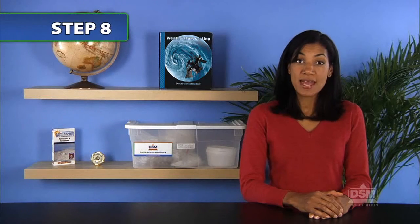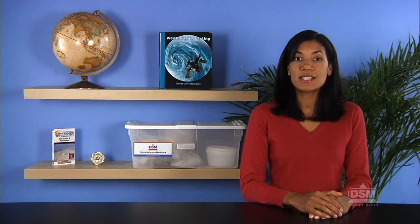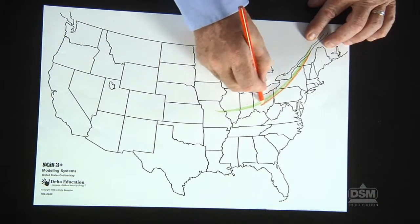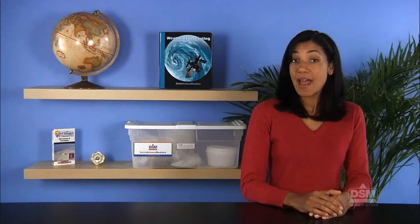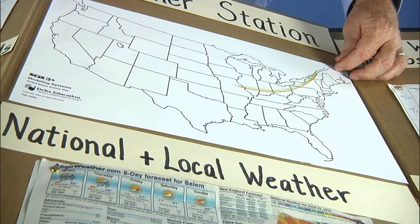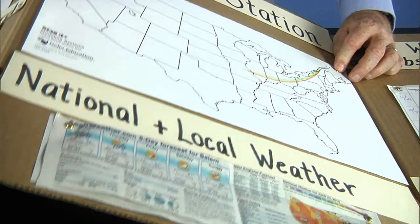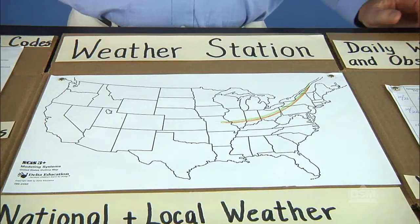Your local paper may or may not show isobars on the weather report. If the isobars are there, tell teams to use a different colored pencil to draw them on their outline map. After teams finish, return the outline map to its position on the weather station and secure it with paper fasteners.